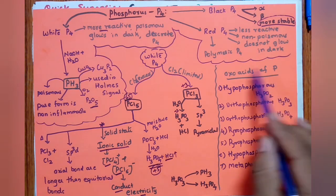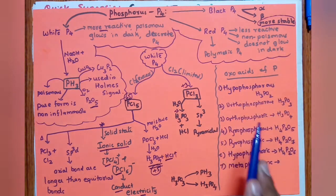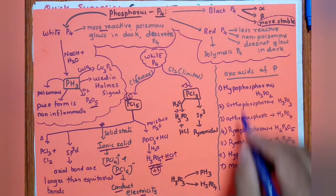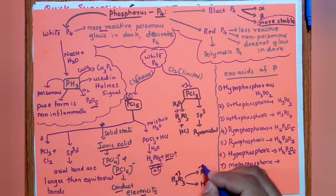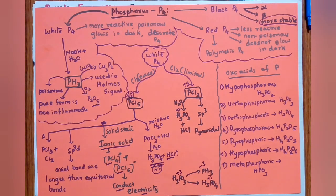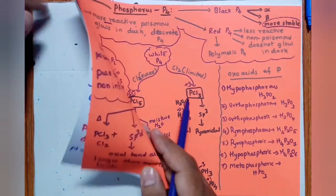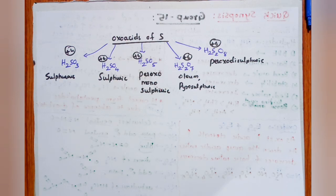Oxo acids of phosphorus: hypophosphorous acid (H3PO2), orthophosphorous acid (H3PO3), orthophosphoric acid (H3PO4), pyrophosphorous acid (H4P2O5). H3PO3 can undergo disproportionation reaction — one element undergoes both oxidation and reduction. Phosphorus goes from +3 to −3 and +1, forming phosphine (PH3) and phosphoric acid (H3PO4).